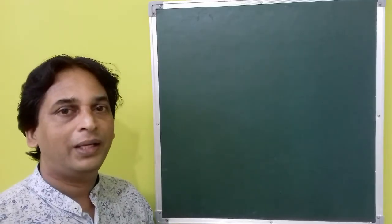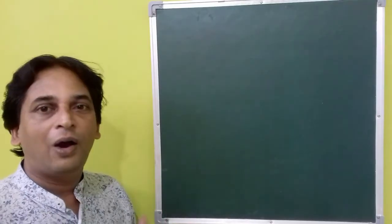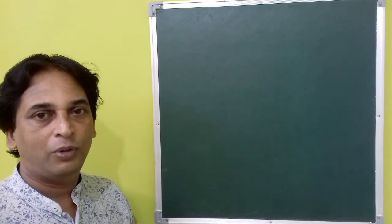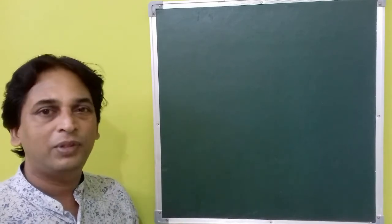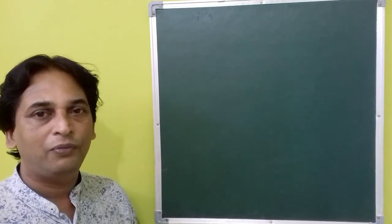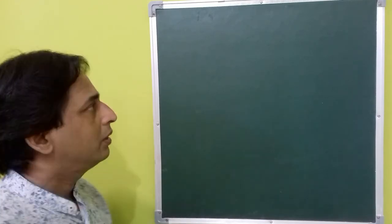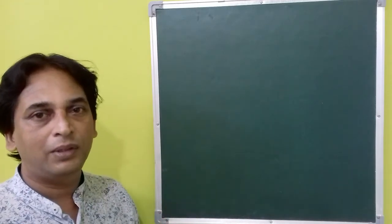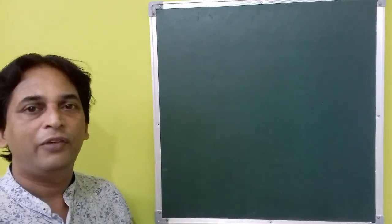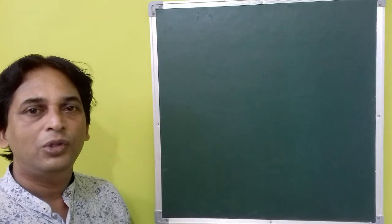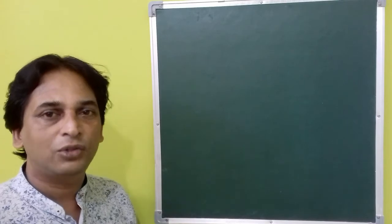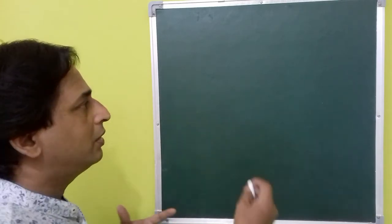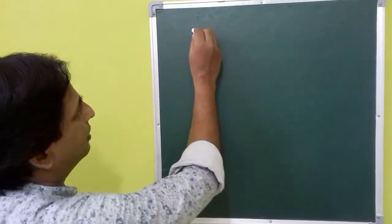A quadratic polynomial can have a maximum of two zeros. How can you find the zeros of a quadratic polynomial? It depends on the type of polynomial we have. In some cases we can use the splitting the middle term method, or you can use different methods to find the zeros of a quadratic polynomial. Let us see some examples.